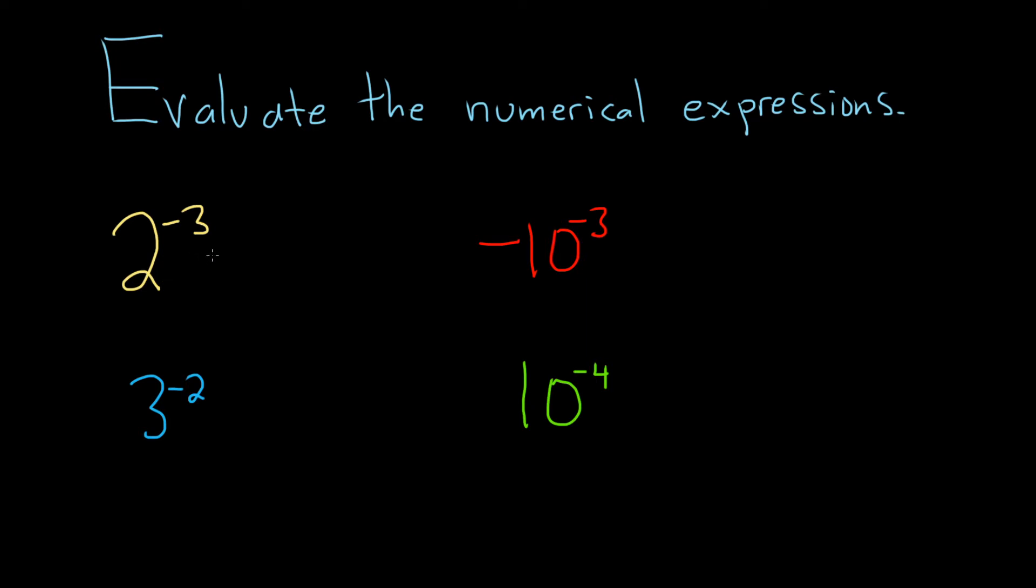Typically when you're trying to work something like this out, you want to make sure your exponent is positive. So really this is a number over 1, so what you can do is bring the 2 downstairs and that will leave you with a 1 upstairs and you can make the exponent positive. Whenever you move a number like this up and down, it changes the sign on the exponent. And then 2 cubed is just 2 times 2 times 2, which is 8, so this is equal to 1 over 8.